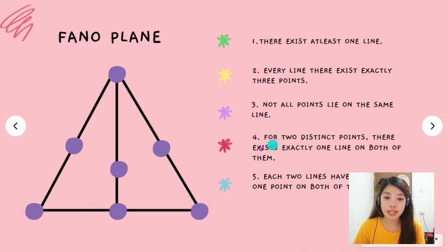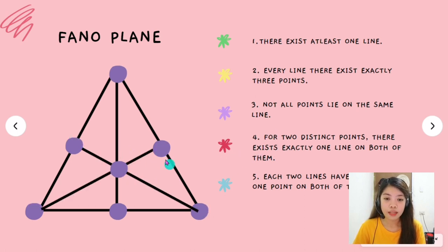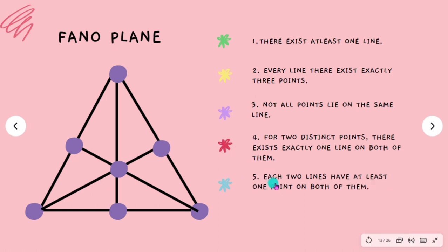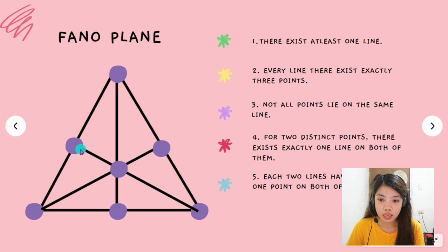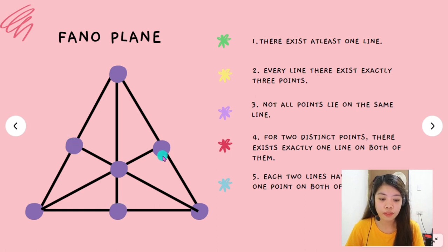For 2 distinct points there exists exactly 1 line on both of them. As you can see, there are still 2 distinct points here that are not connected with each other, so let us connect them with a line based on axiom 4, and it will result in this. Axiom 5 states that each 2 lines have at least 1 point on both of them — meaning this line and this line intersect at this point, and so on and so forth. There are still points not connected, so let us connect them. So it will look like this.